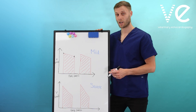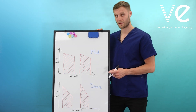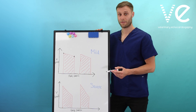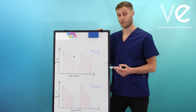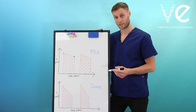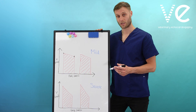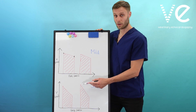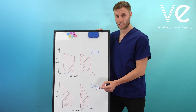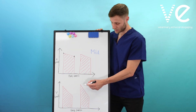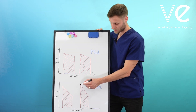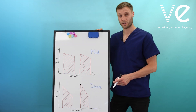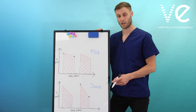The larger the pressure half-time, the less severe the regurgitant jet. If you have severe regurgitation, you'll have a large orifice area, so the pressures between the aorta and the left ventricle will equalise quickly, giving a steeper slope. When you measure between the two points you'll get a reduced pressure half-time.